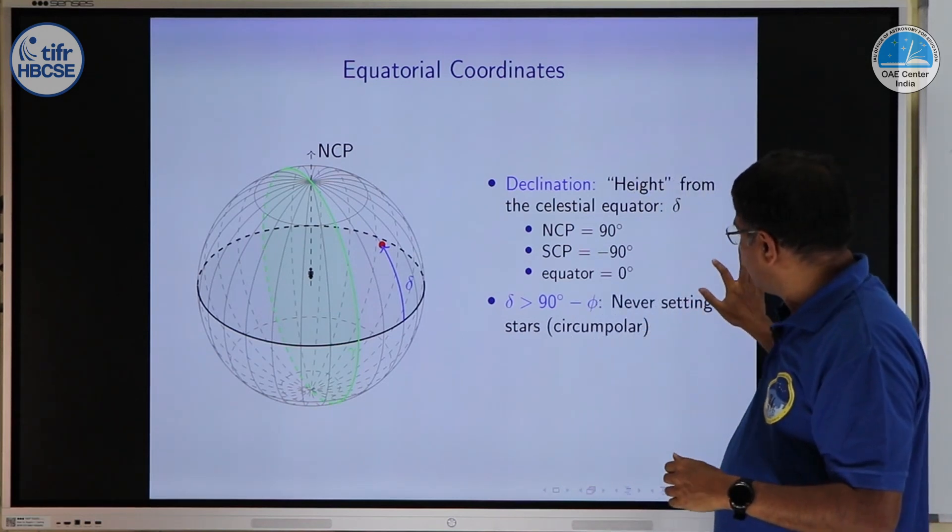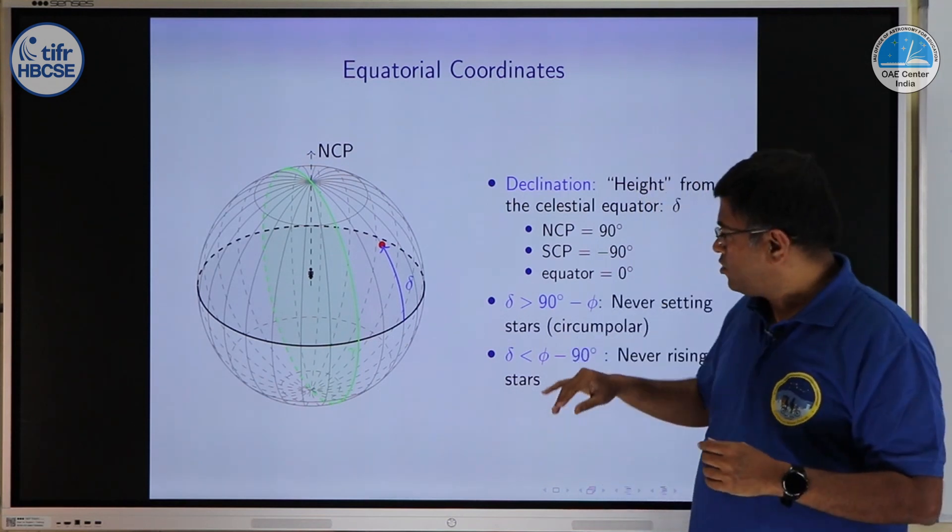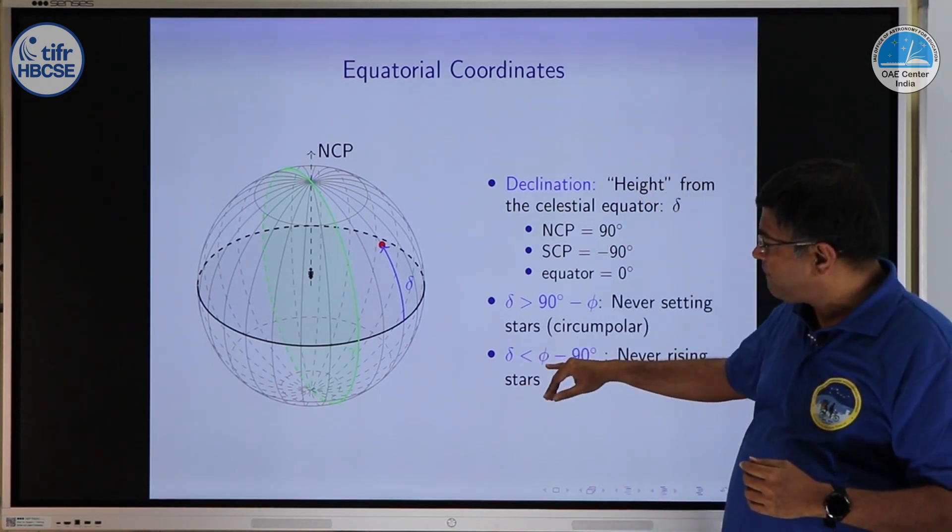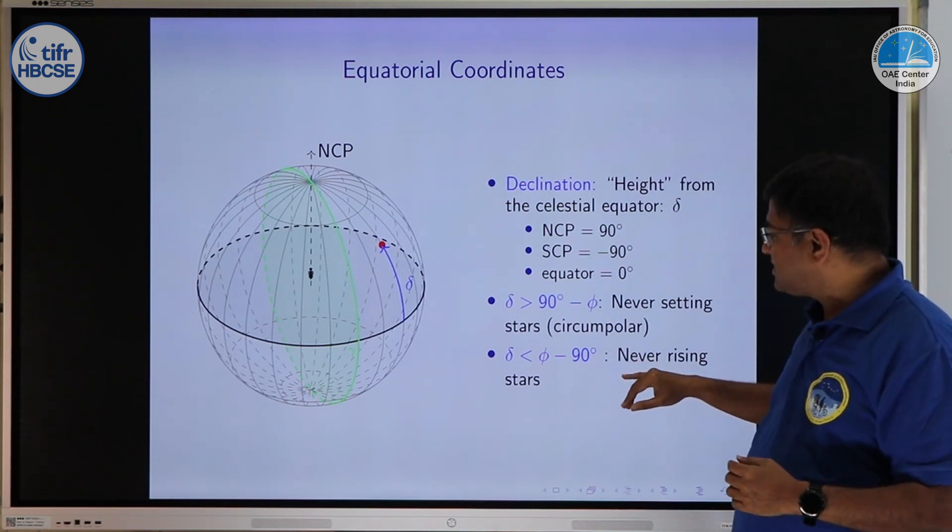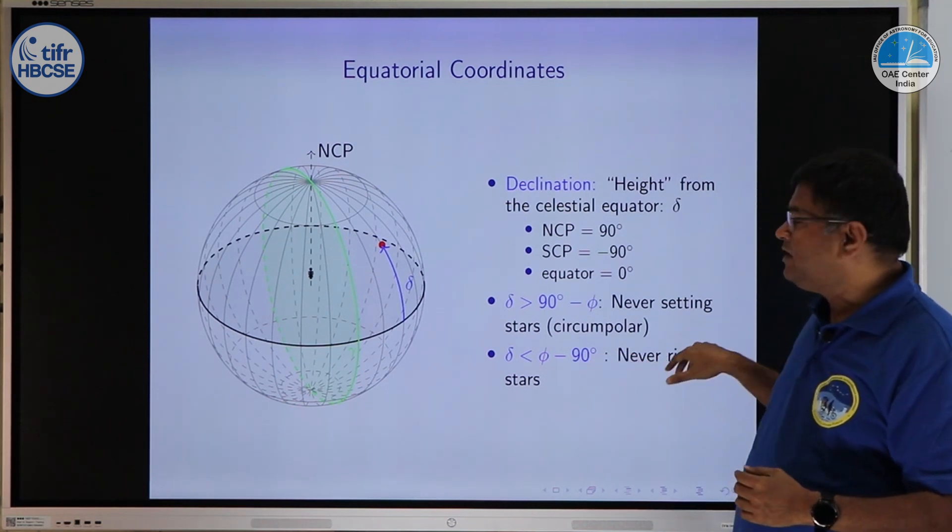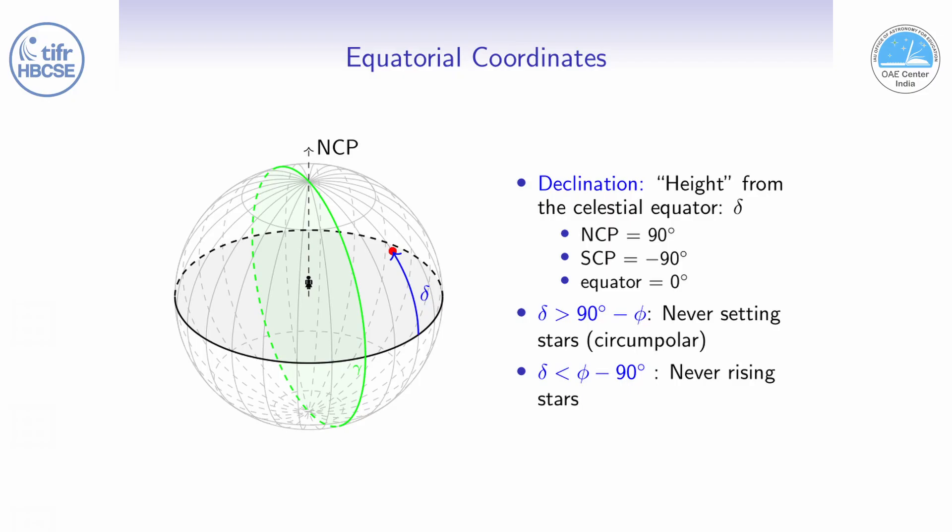Conversely if you take any star whose declination is less than phi minus 90 then that star will be a never rising star in your location. For Mumbai put 19 here, 19 minus 90 equals minus 71, so all stars with declination less than minus 71 will never be seen in Mumbai.